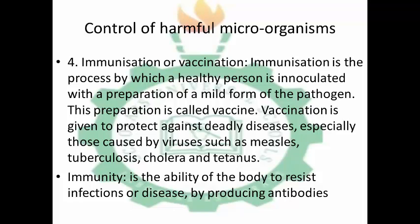Immunization is when a person is injected with a preparation of a mild form of a pathogen. For example, with measles, the active particle present in the measles-causing pathogen has been removed. The remaining part is introduced into the body, so the body will fight against it. In fighting against it, the body will develop immunity in case the real measles enters the body. Immunity is the ability of the body to resist infections or diseases by producing antibodies, which provide immunity for the body.